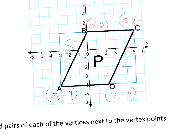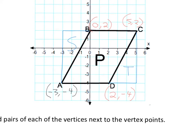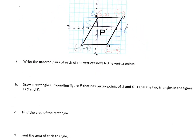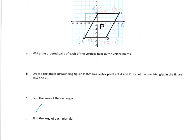Then it says find the area of the rectangle. I'm just going to count. The height is 1, 2, 3, 4, 5, 6 — the height is 6. And the width is 1, 2, 3, 4, 5, 6, 7, 8 — so it's 8 across. So the area equals 6 times 8, which is 48. It doesn't give us any units, so this is 48 square units.